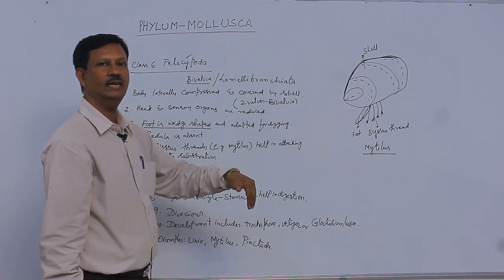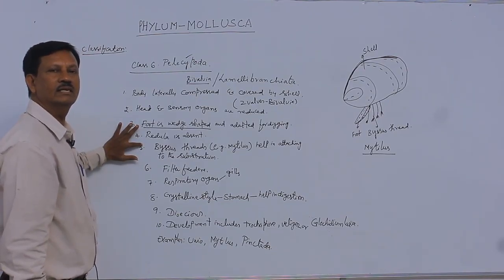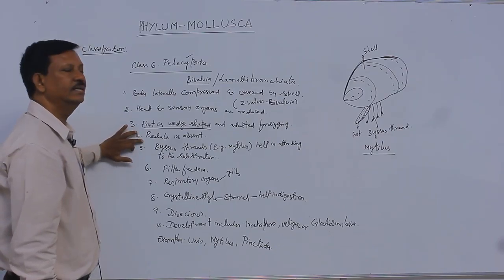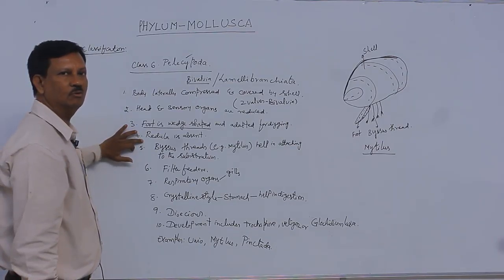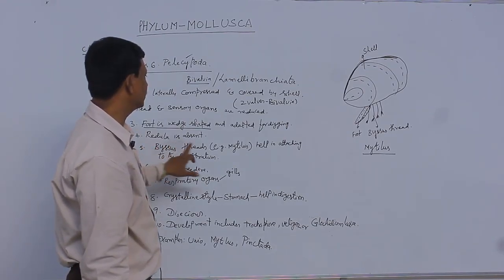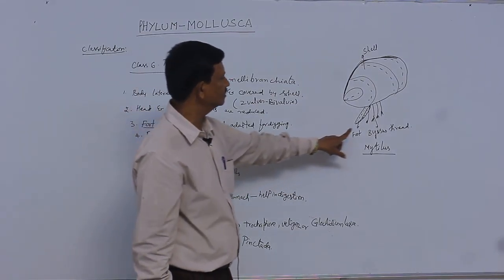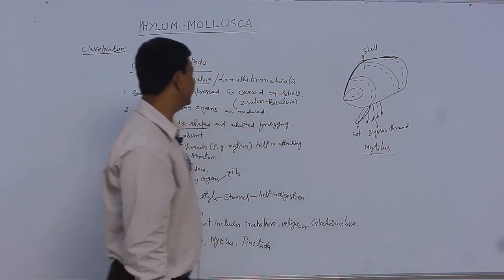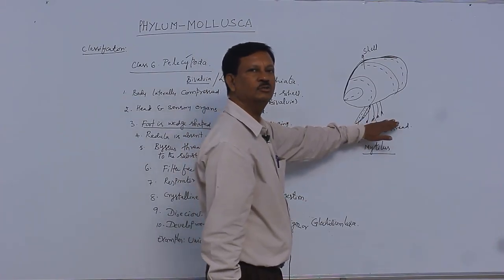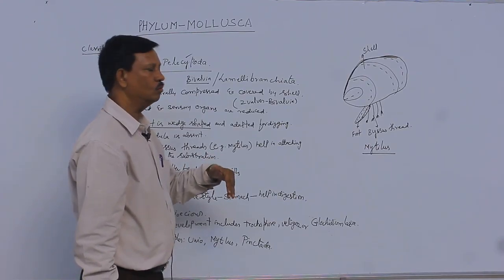Radula is absent in the buccal cavity. Although radula is present in molluscs, it is absent here. Instead, byssus threads are present. For example, in Mytilus, thread-like structures known as byssus threads are present. With the help of these threads, it is attached to the substratum where it is present in the water.